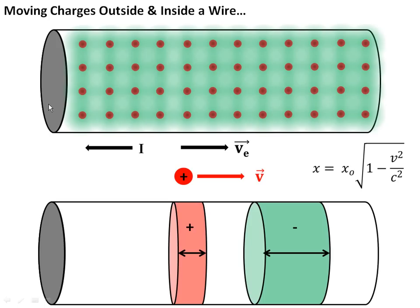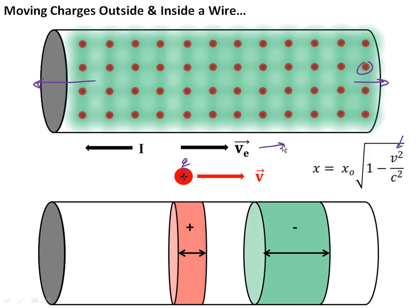Now we're ready for our third case. We've examined case one, where a current in the wire meant the green cloud of electrons moved while the positive charges stayed fixed, giving a current in the opposite direction. And case two, where a positive charge with a little rider zipped along outside the wire, producing a compression of space at significant fractions of the speed of light. In case three, the electrons are moving inside the wire in the same direction as the positively charged particle moving outside. To a first approximation, those two frames of reference are the same — like two cars going the same speed down the highway.